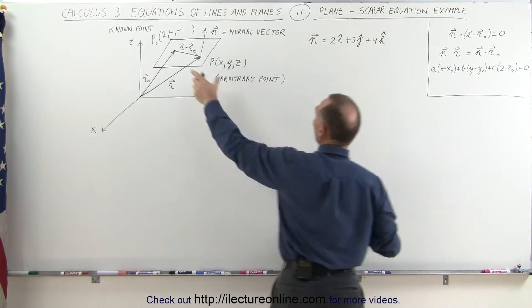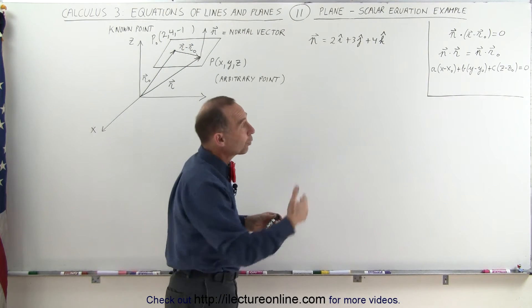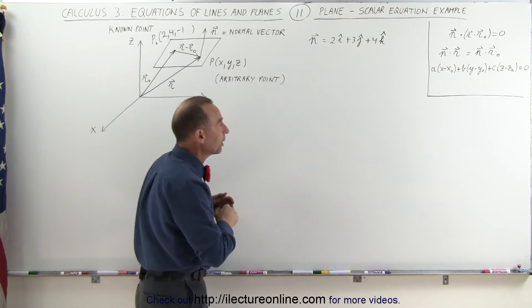Here, X sub-naught, Y sub-naught, and Z sub-naught are the coordinates of the known point on the plane. And of course, X, Y, and Z are the unknown or arbitrary point on the plane.